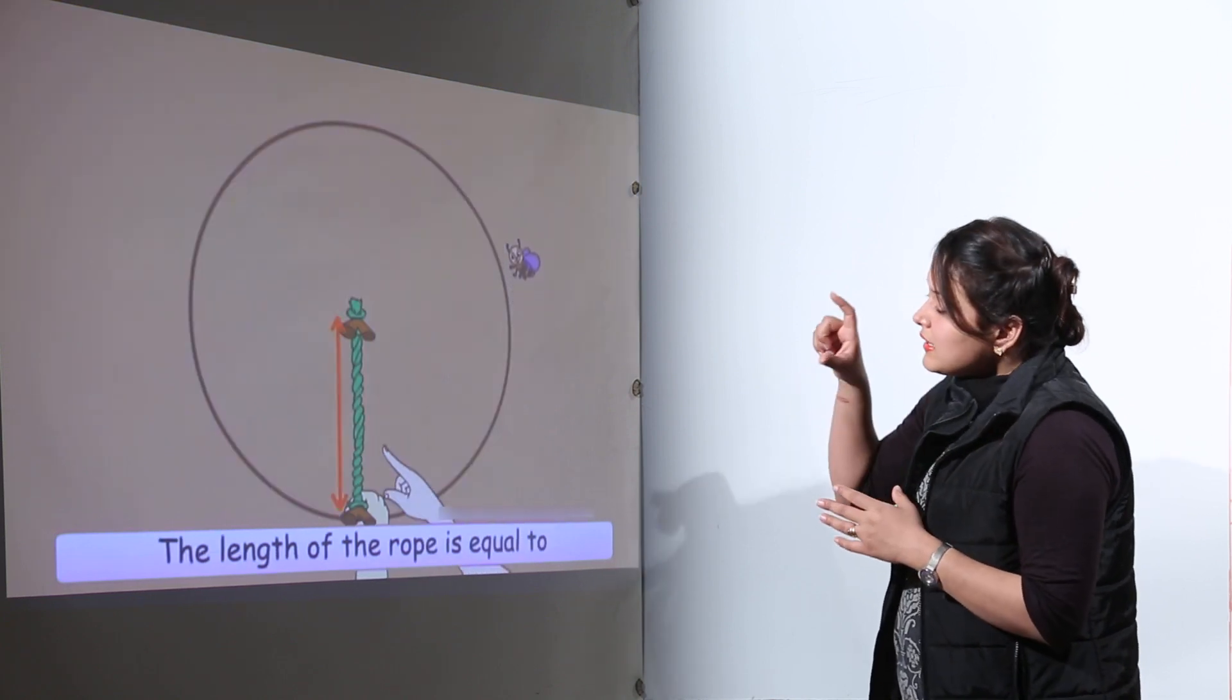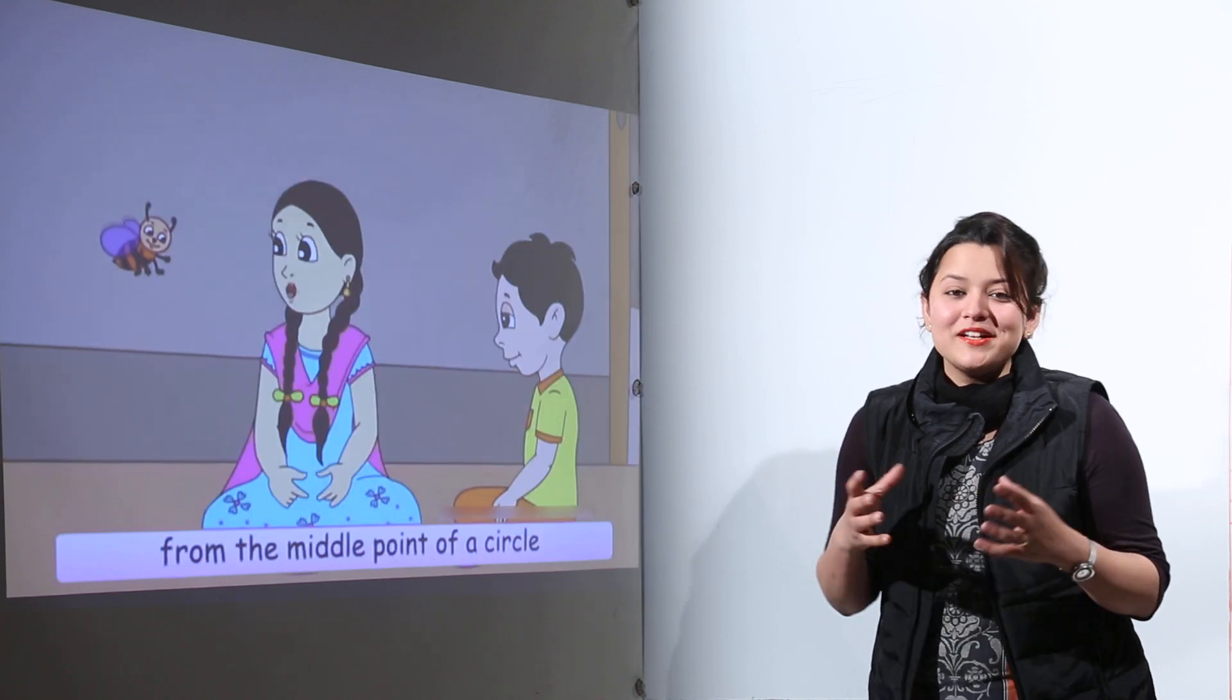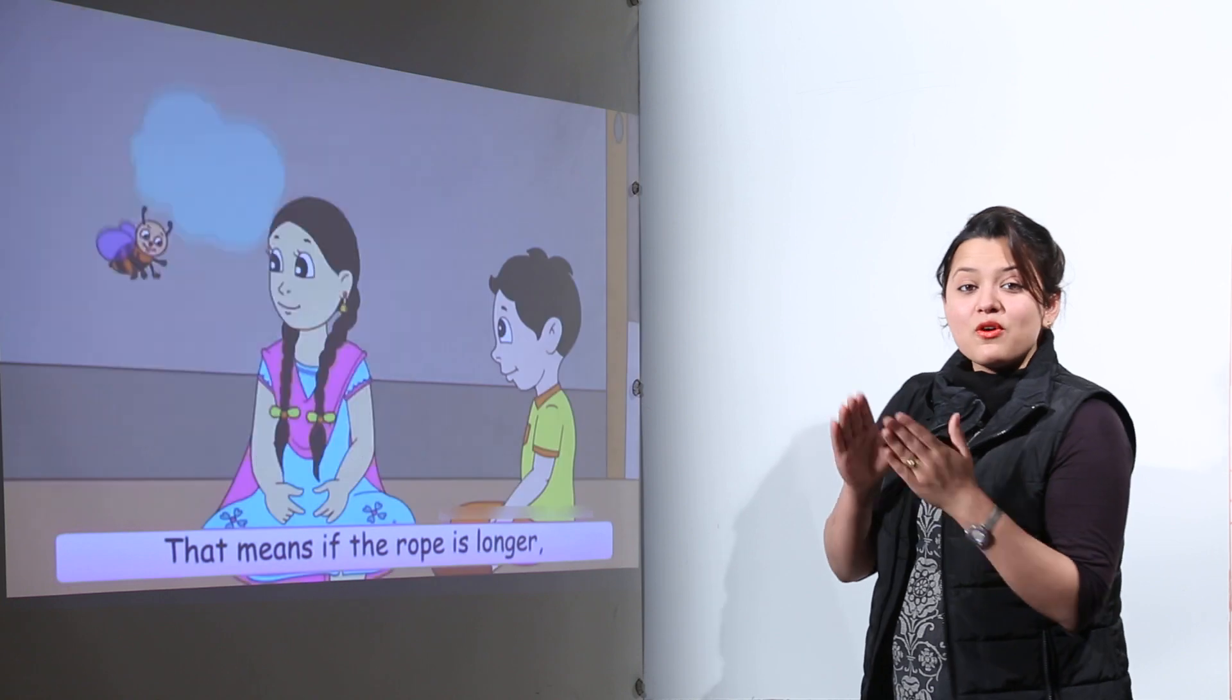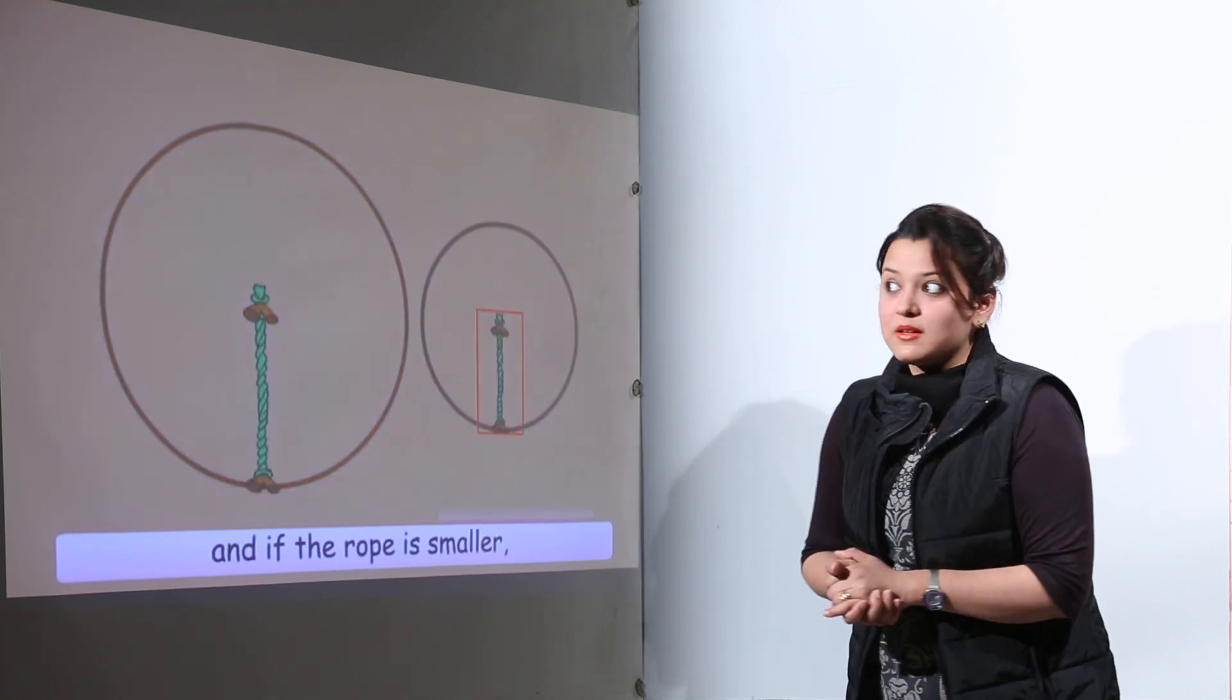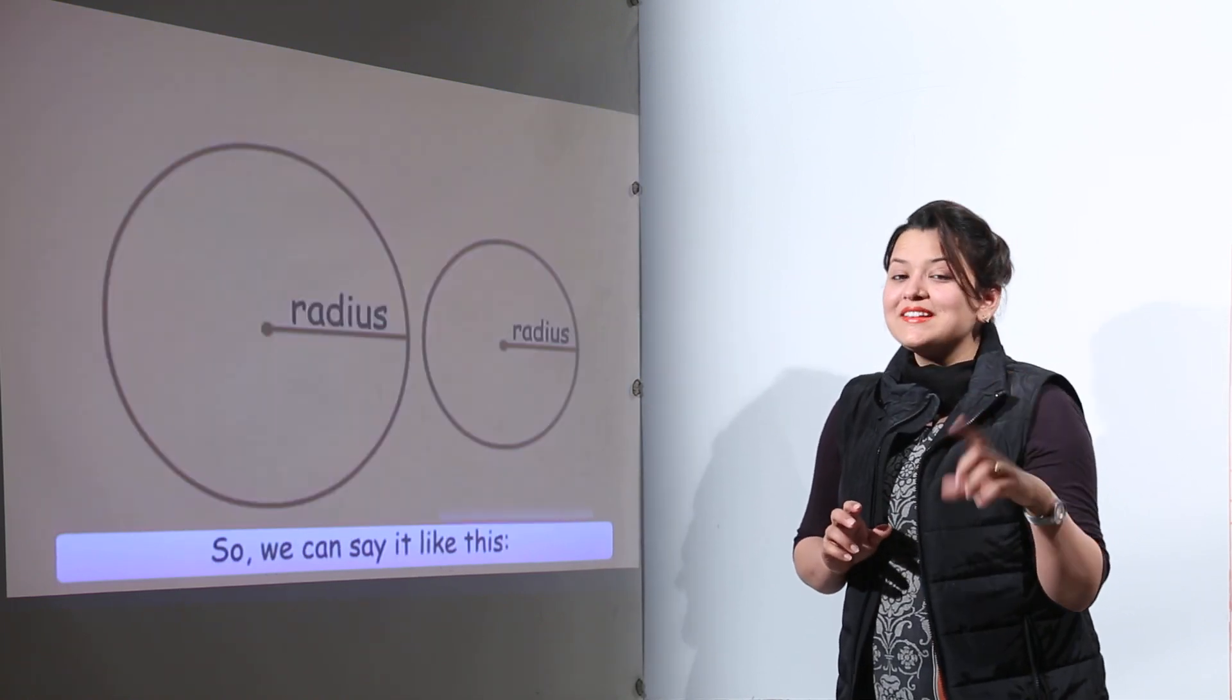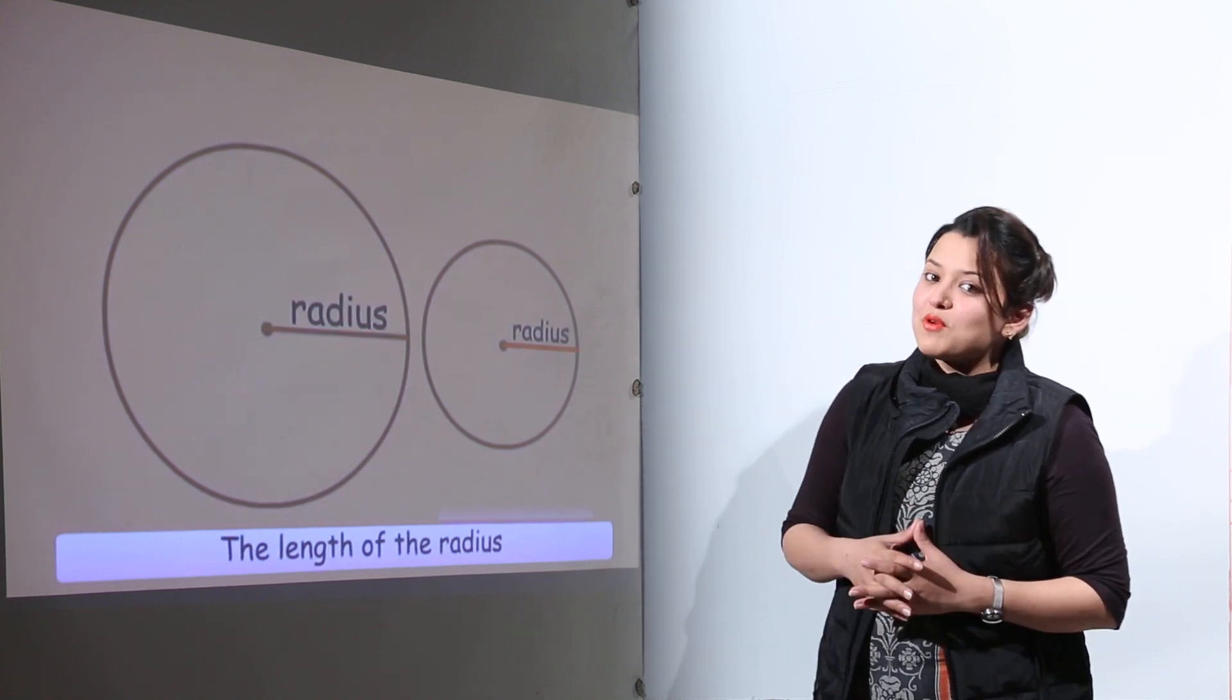They've learned that the length of the rope is actually the length of the radius of the circle. What is the length of the radius? The distance from the center to the boundary of the circle is the radius of the circle. If there are two circles, one with bigger length will be the bigger circle. One with smaller length of radius will be the smaller circle.